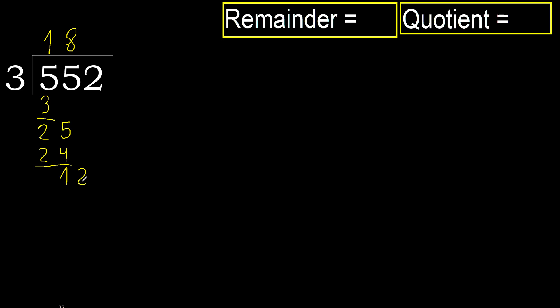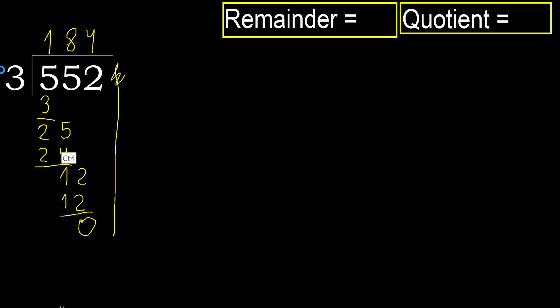Next: 12. 3 multiplied by 4 is 12. 12 is not greater. Ok, subtract: 12 minus 12 is 0. Next — that is not a number, therefore finish.